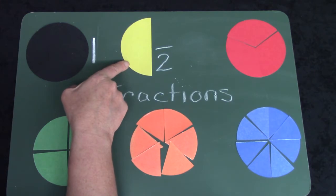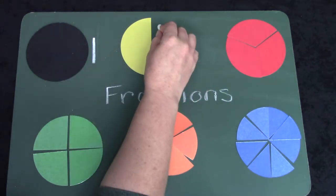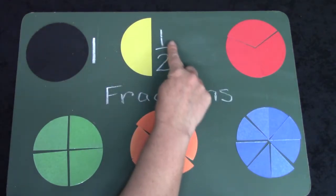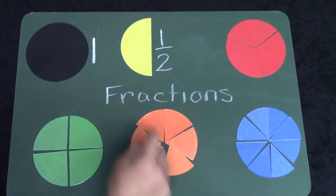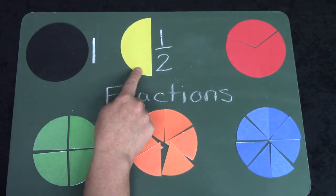But how many pieces do I have right now? That's right. I have one out of the two pieces that I need. So this is one half of a circle.